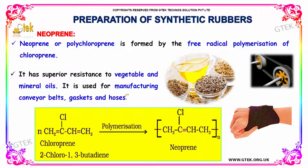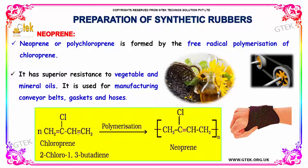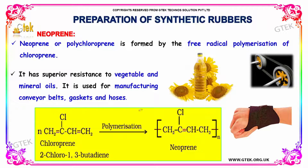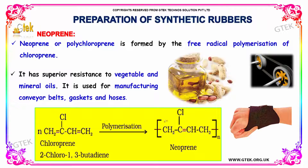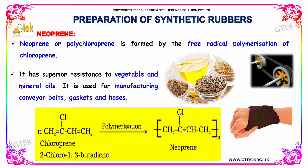The reaction is as follows. Chloroprene undergoes polymerization to form neoprene of N units. Chloroprene is nothing but 2-chloro-1,3-butadiene.